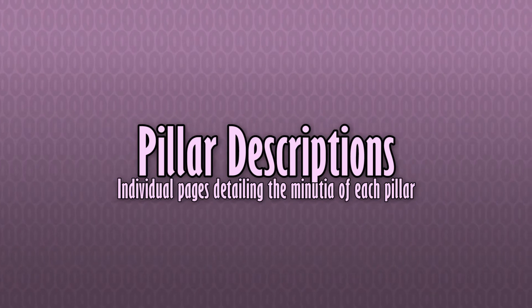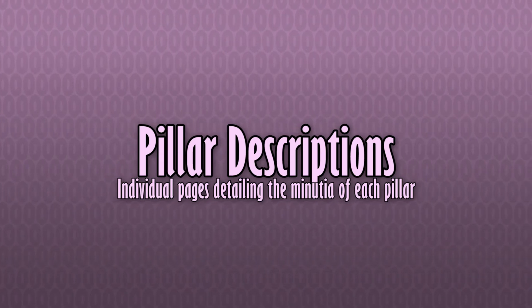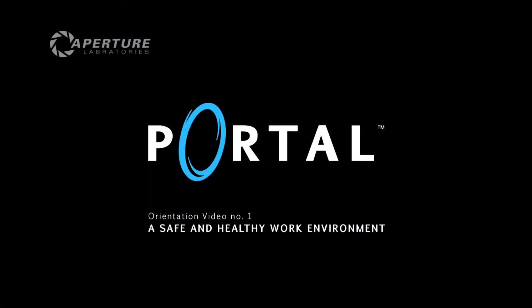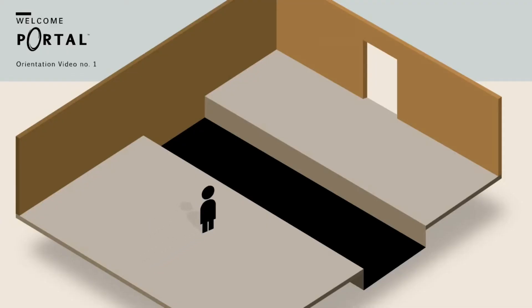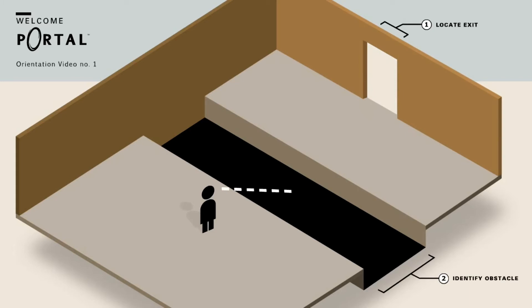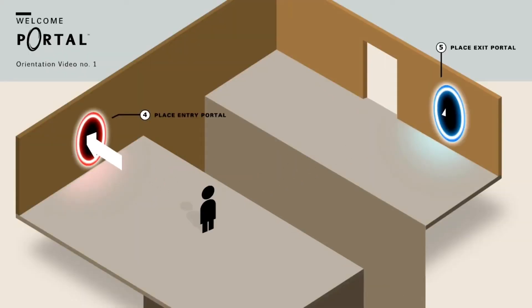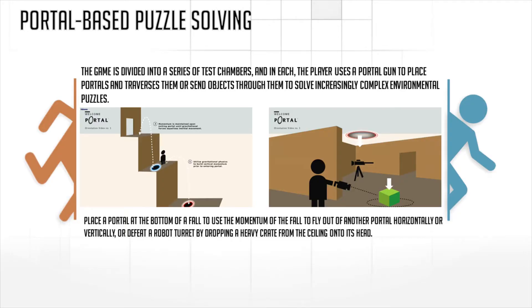The pillar description is an individual page that explores in more depth the individual pillar, explaining its meaning and how it interacts with the game and the player's experiences of playing the game. It might include an example of how that pillar is presented in the game as well. Think of the page as explaining in text how Portal's promotional videos demonstrated portal puzzle-solving. Use diagrams and illustrations as necessary as well, but keep brevity in mind. Less text means more chance someone will read the whole thing. You'd typically create a page for each of the pillars defined in the pillar summary page.